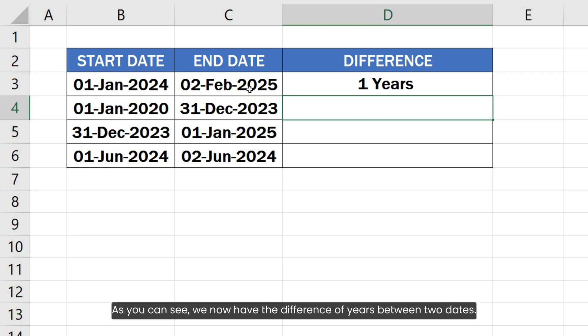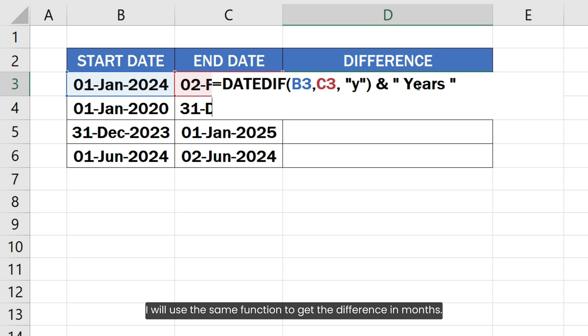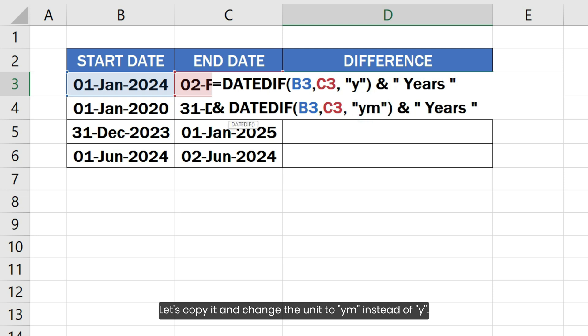As you can see, we now have the difference of years between two dates. I will use the same function to get the difference in months. Let's copy it and change the unit to ym instead of y. Also let's change the years text to months text.